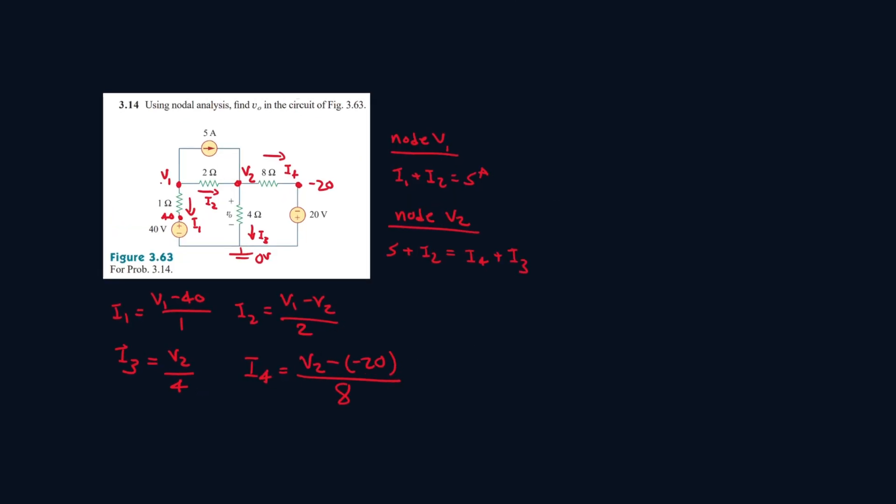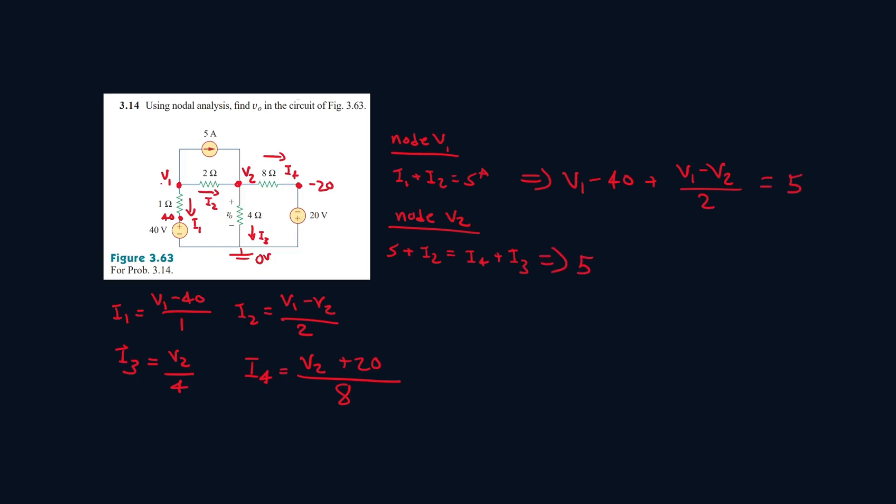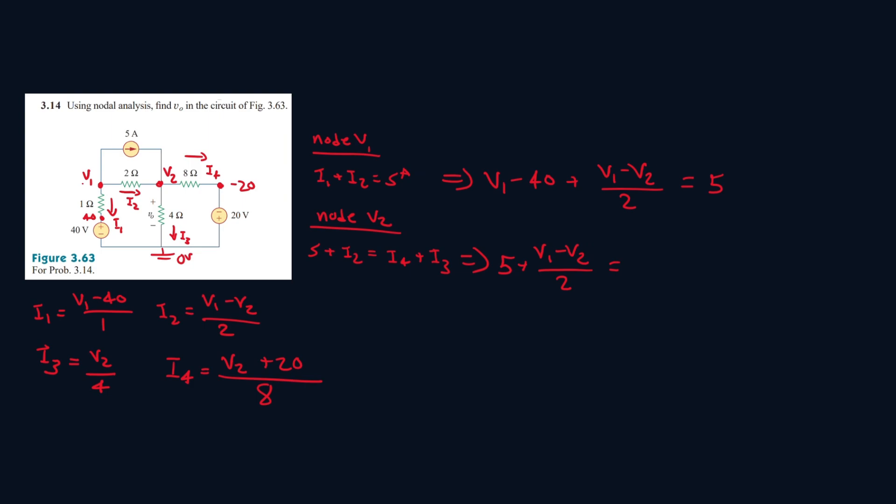Alright, so that's all the equations we're going to need, and then minus 20, that's just positive 20. For this one, it's I1, which is V1 minus 40, plus I2, V1 minus V2 all over 2, equals I4, V2 plus 20 all over 8, plus I3, which is V2 over 4.